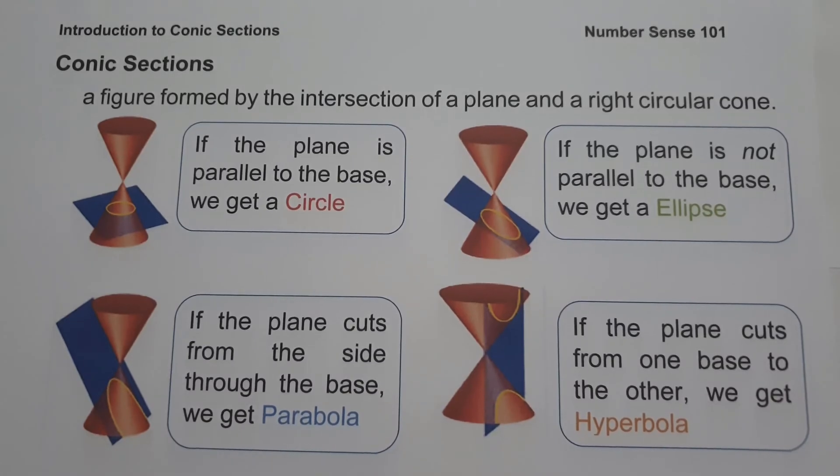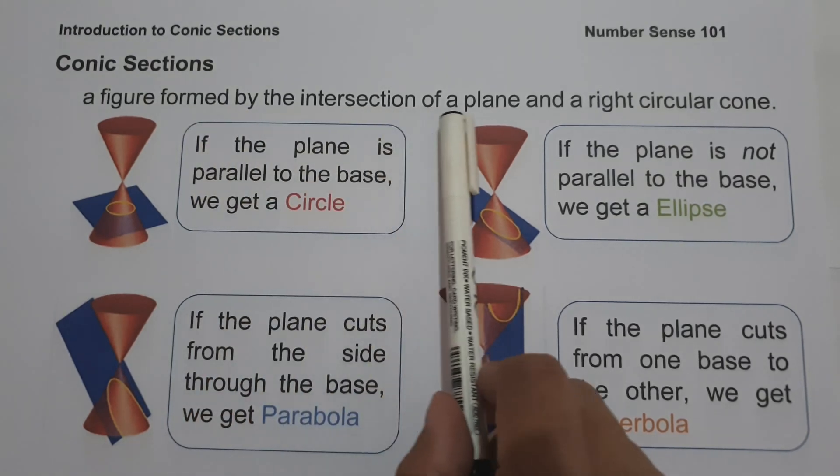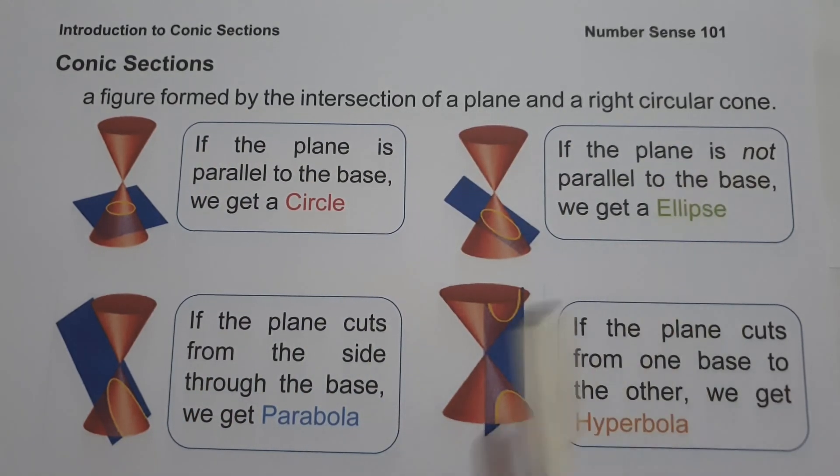For today's video, we are going to have a basic introduction to conic sections. Conic sections are figures formed by the intersection of a plane and a right circular cone, depending on the angle of the plane with respect to the cone.